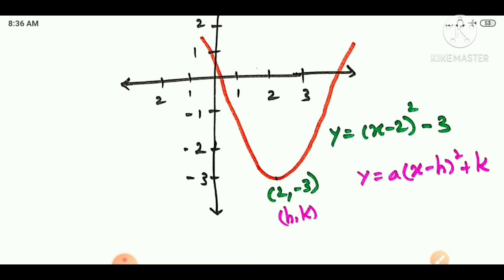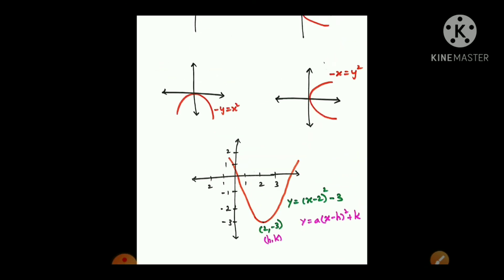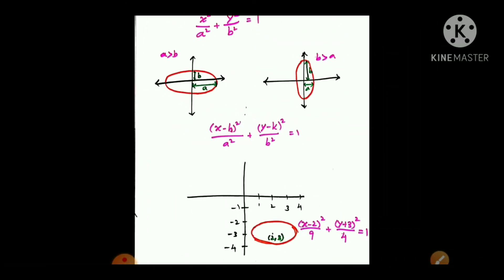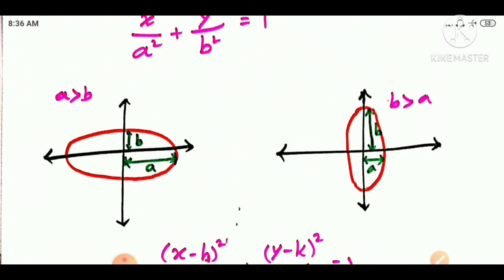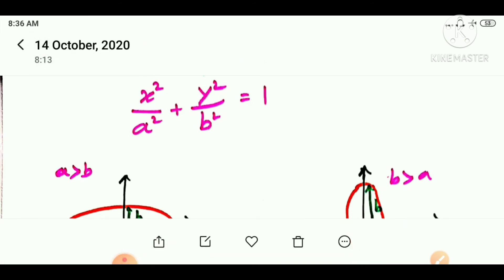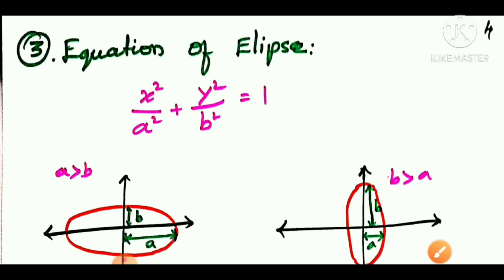Now let's look at the ellipse. The general equation of an ellipse is: x squared divided by a squared plus y squared divided by b squared is equal to 1, where a is greater than b, or b is greater than a depending on orientation.